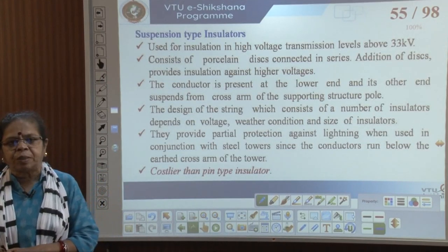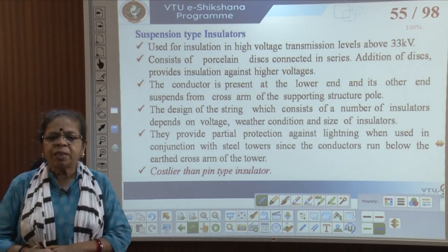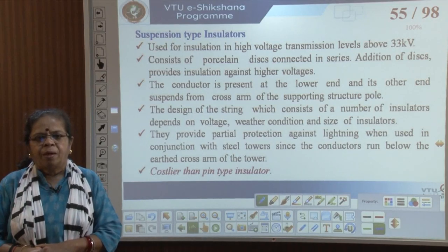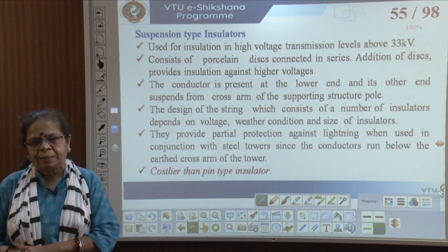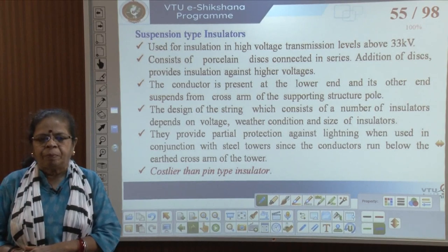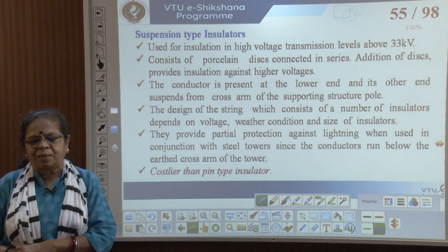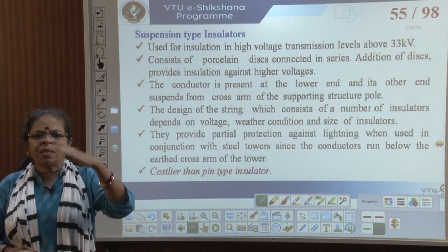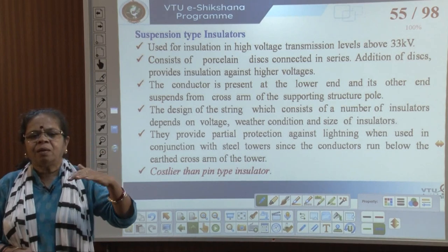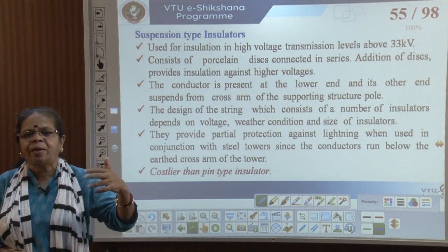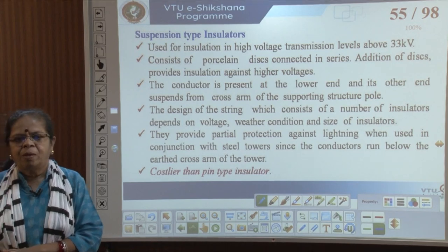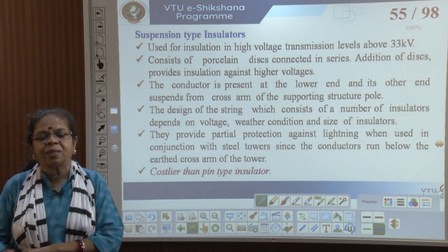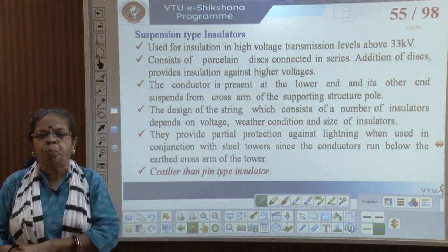Suspension type insulators are used for voltages above 33 kV. They consist of a number of discs connected in series. As you add more discs, insulation is provided against higher voltages. The conductor is present at the lower end and the other end is suspended from the cross arm on the pole.